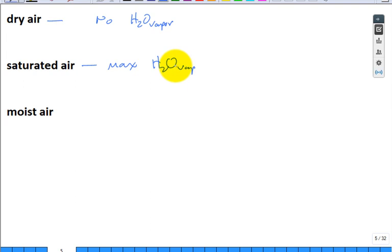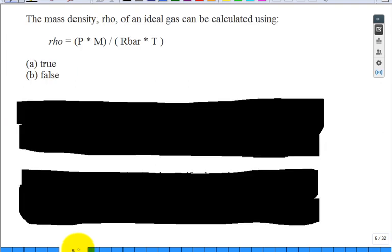Saturated air has the maximum amount of H2O vapor it can't handle anymore. Moist air is somewhere in between - that's the room air right now. We're going to be dealing with ideal gases - ideal gas mixtures. We're going to treat dry air as a mixture by itself, even though it's a mixture of nitrogen, oxygen, carbon dioxide, and argon. They just lump it and call it dry air with one molar mass of 28.97 kg/kmol.